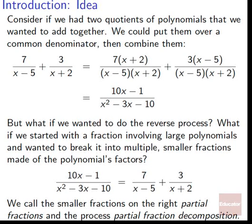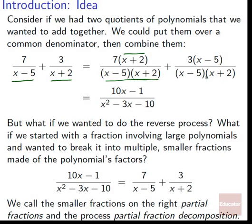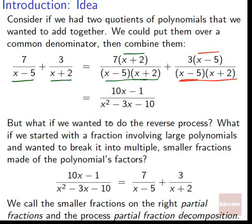Consider if we had two quotients of polynomials that we wanted to add together, like 7 over x minus 5 and 3 over x plus 2. We could put them over a common denominator and combine them. We get x minus 5 times x plus 2 on the bottom. Multiplying out, we get 7x plus 14 and 3x minus 15, which combine to 10x minus 1 on top, divided by x squared minus 3x minus 10.